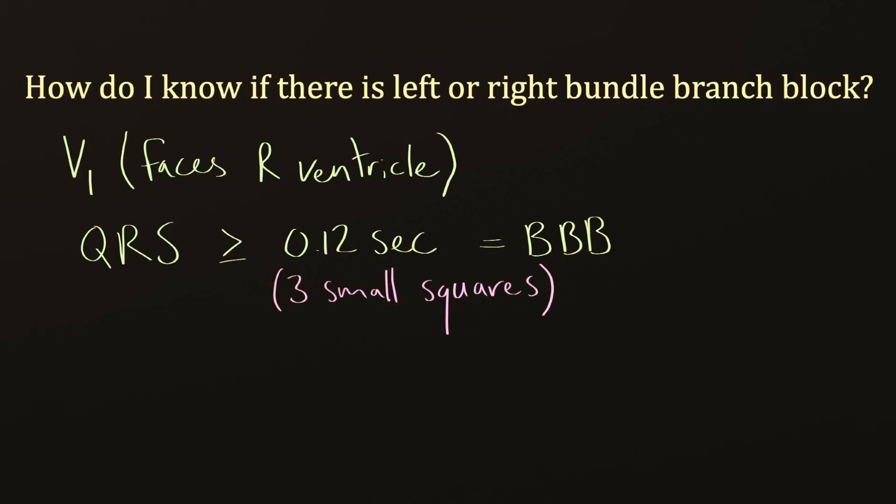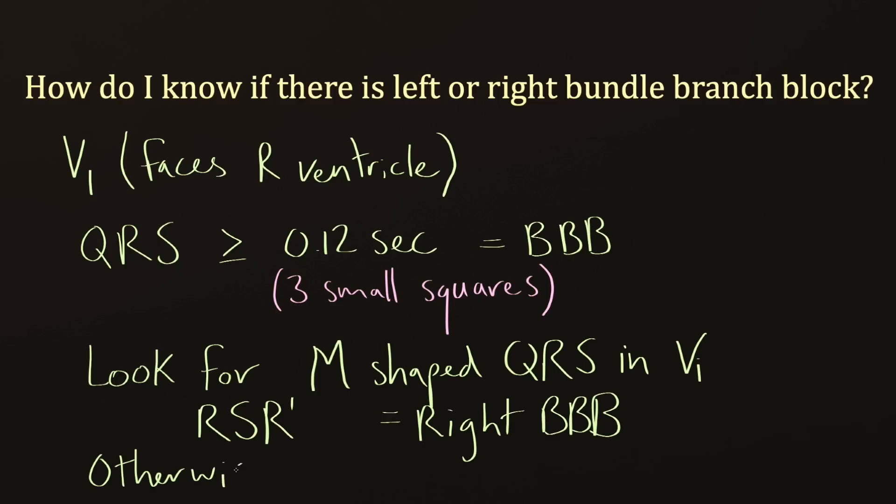Once we've determined whether or not we have a widened QRS or a bundle branch block, then we need to decide if it's left or right. The way we're going to do that is we're going to look for an M-shaped QRS in V1. If we do have that M-shape, which is also called RSR' pattern—an R wave followed by an S wave, which is negative, followed by a second positive R wave—then you've got right bundle branch block. And if you don't have an M-shape in V1, but you do have a widened QRS, then you have left bundle branch block.